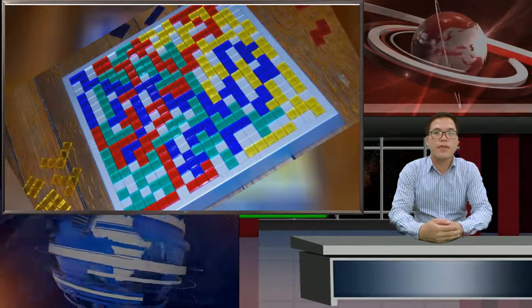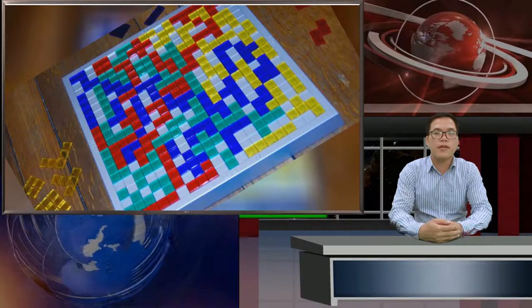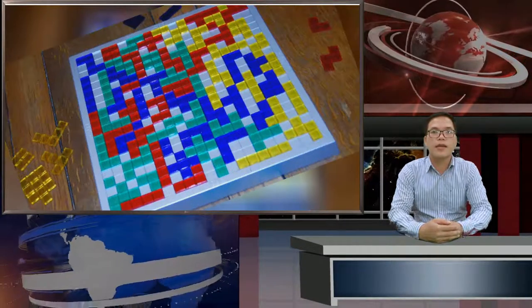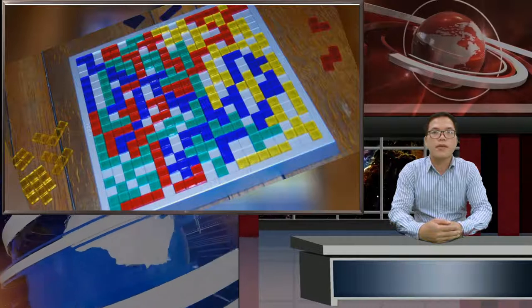Chess is an ancient game with several theories about its origin. Perhaps the most widely accepted version is that the game originated in India in the 5th or 6th century AD. One of the earliest games connected to chess was called chaturanga, which is a type of battle formation.